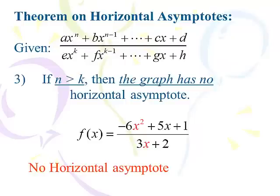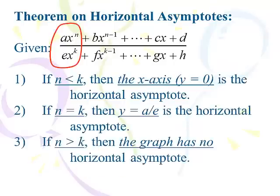For our last case, I've got 6x squared on top and 3x on the bottom. The numerator is going to get huge compared to the denominator. In this case, there is no horizontal asymptote — there's no limit to this function. As x gets bigger, this thing is going to get huge. There is no horizontal asymptote when the numerator has a greater degree than the denominator. Again, we only concern ourselves with the lead terms in both the numerator and denominator — n and k, the degree of the numerator and denominator. There are only three cases: either the x-axis, the ratio of the two coefficients, or there is no horizontal asymptote.